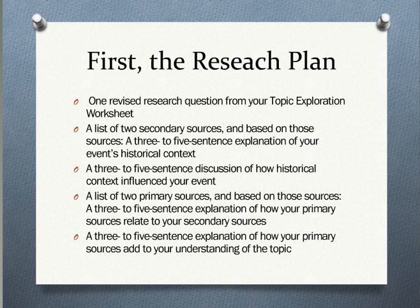This is what we're asking you to do in the first part, the research plan part. We want you to include a revised research question, list your two secondary sources, a three-to-five sentence explanation of your event's historical context, a three-to-five sentence discussion of how its historical context influenced your event, your list of two primary sources, another three-to-five sentence explanation of how these sources relate to your secondary sources, and finally, yet another three-to-five sentence explanation of how your primary sources add to your understanding of the topic.